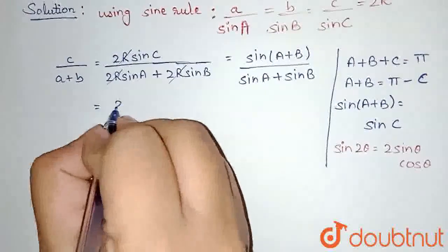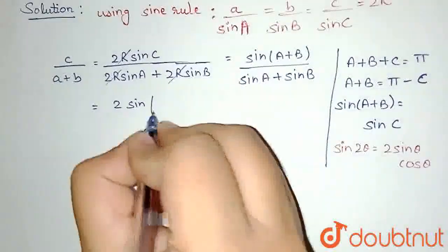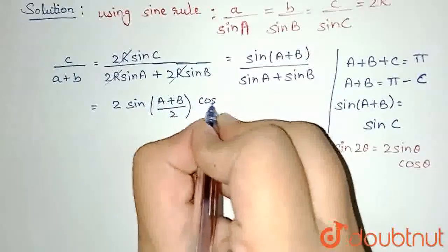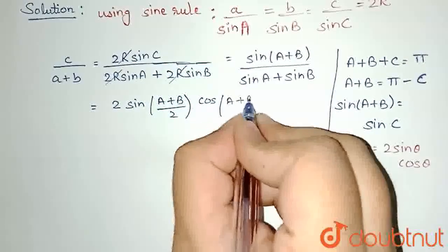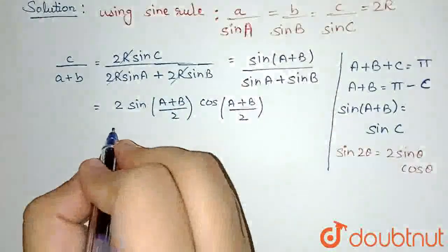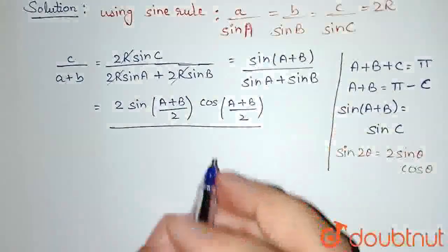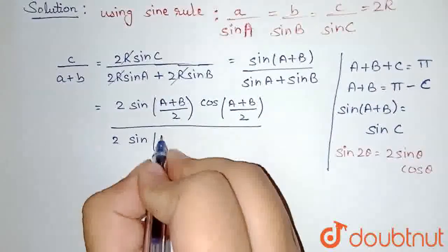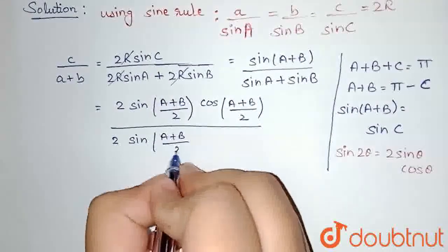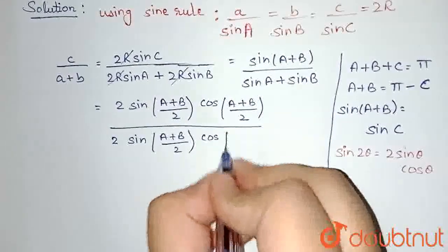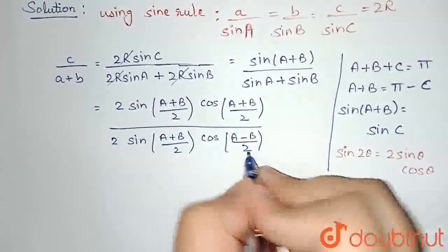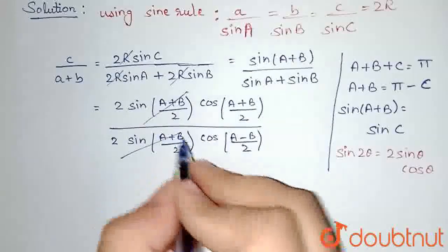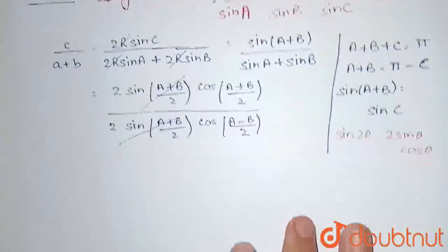I can write the numerator as 2·sin((A+B)/2)·cos((A+B)/2). For the denominator, sinA + sinB equals 2·sin((A+B)/2)·cos((A−B)/2). The common term 2·sin((A+B)/2) cancels from numerator and denominator.